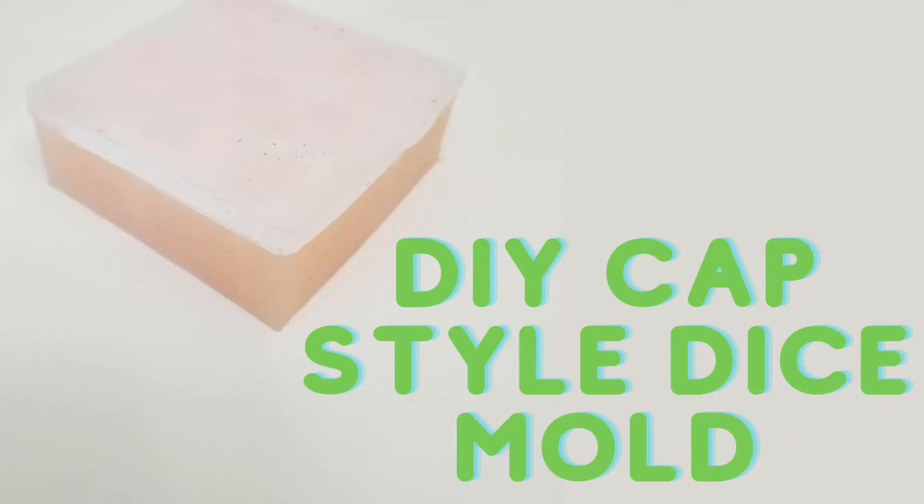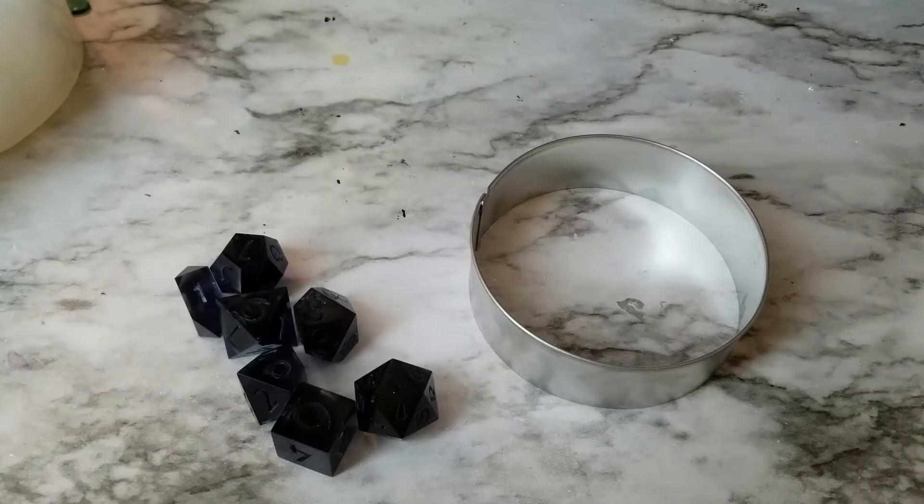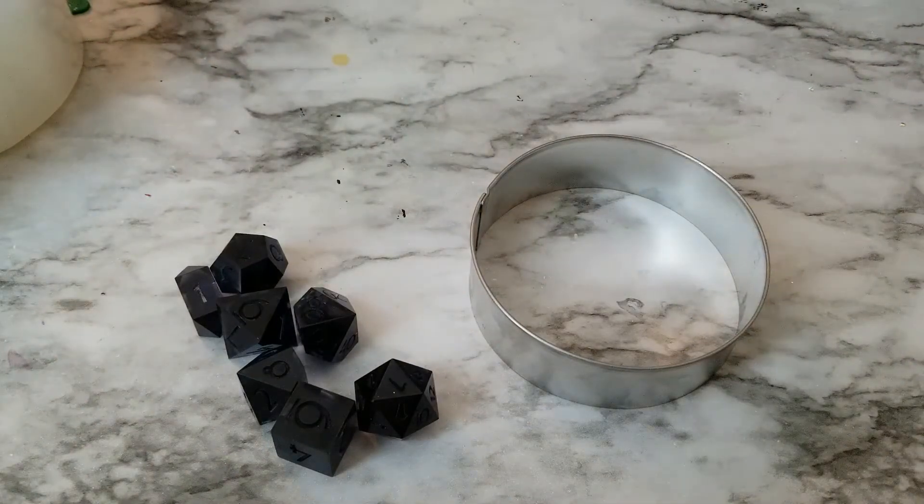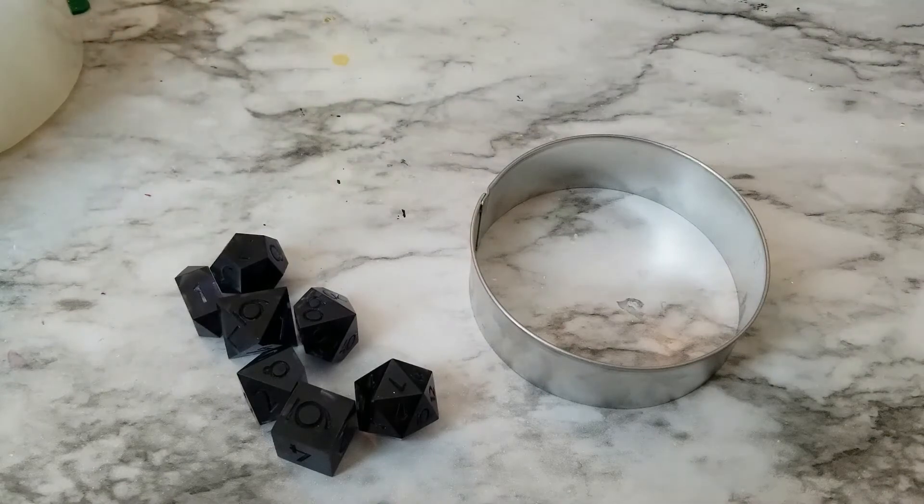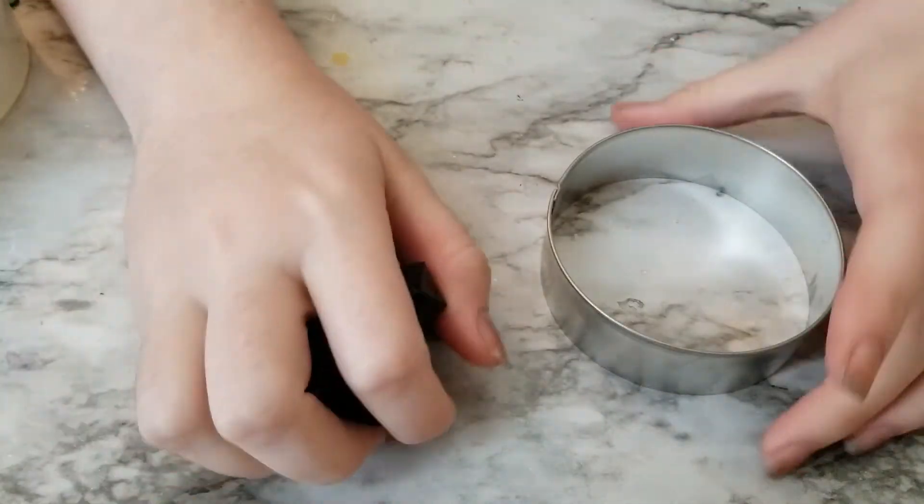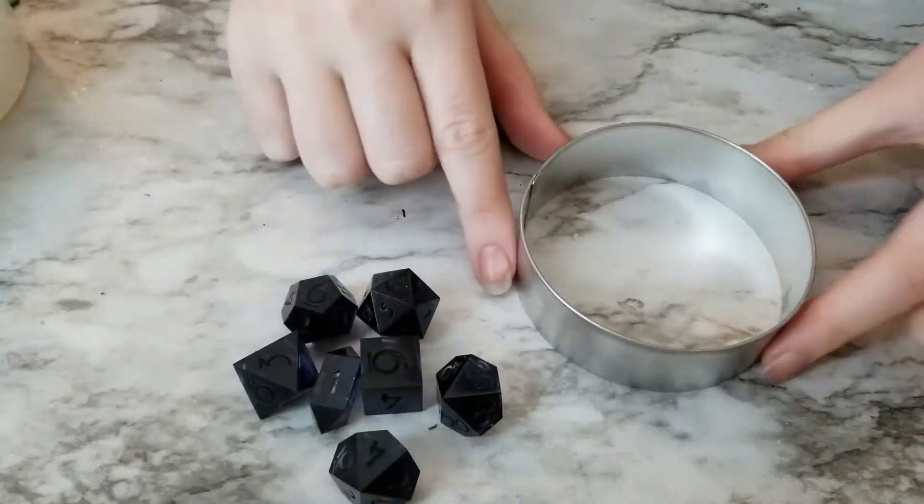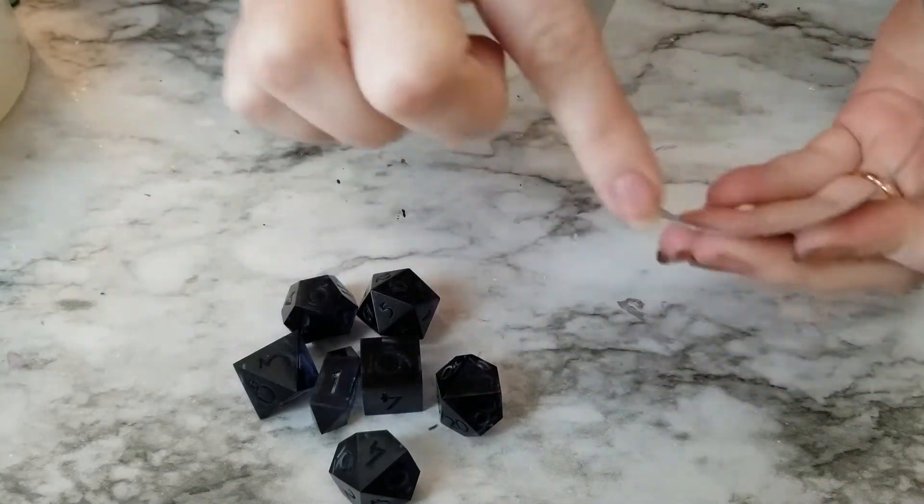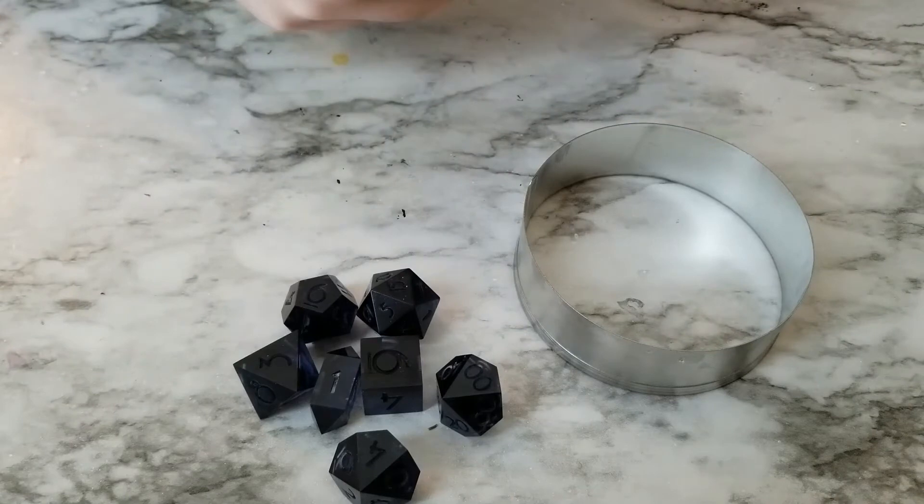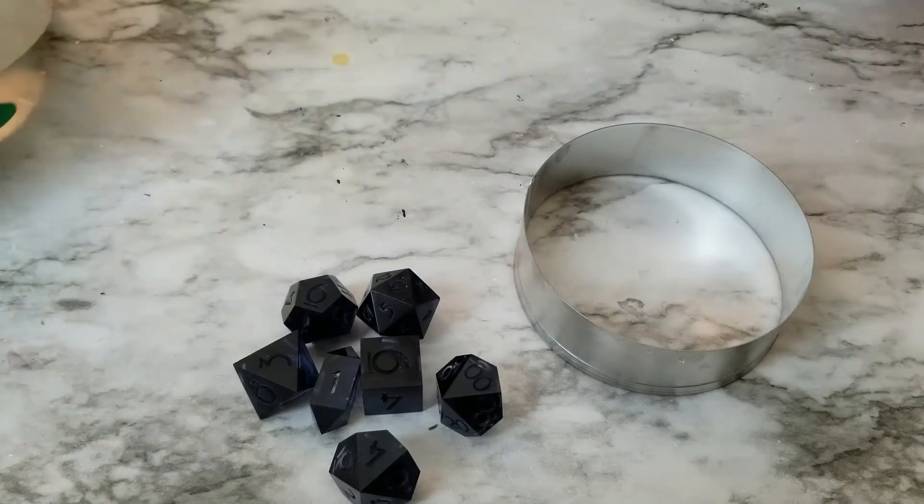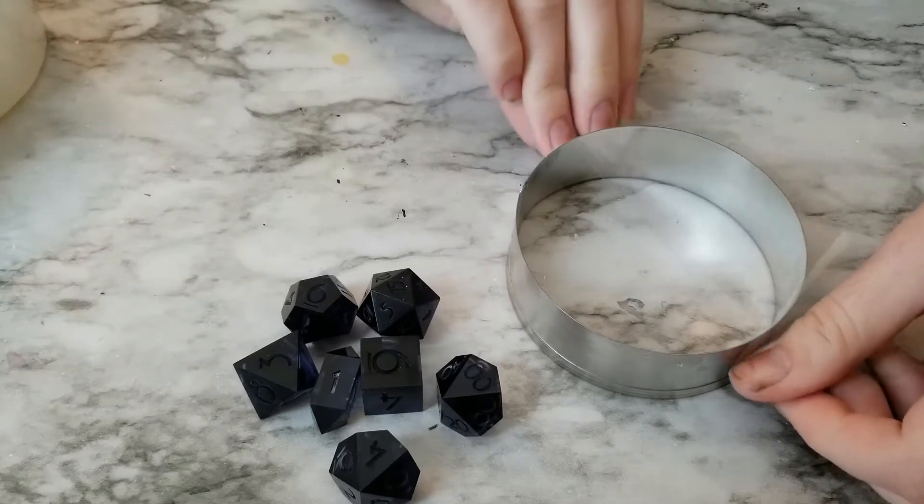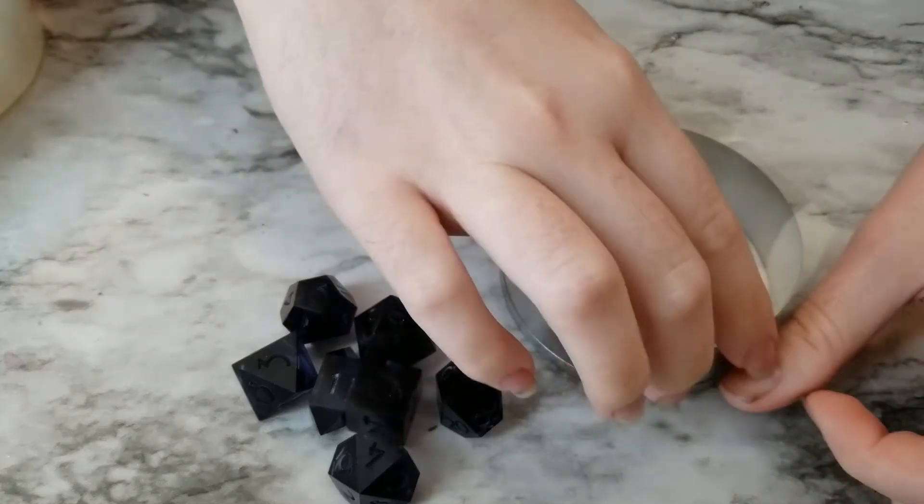Hey guys, welcome back to my channel. Today I'm going to be showing you how I make my dice molds. To get started you're going to need your dice masters obviously and a cookie cutter. It doesn't matter really what shape you use. I like to use this circle or a smaller square shape that I have.